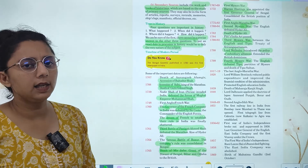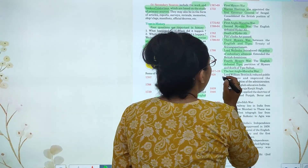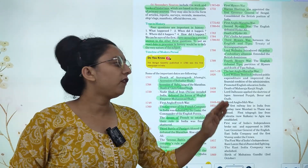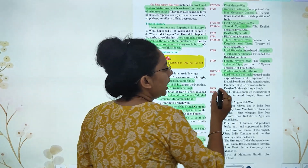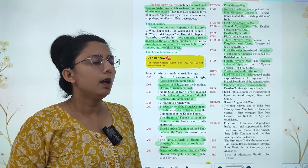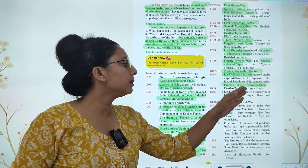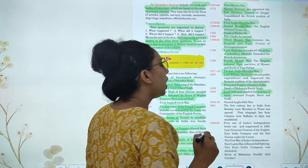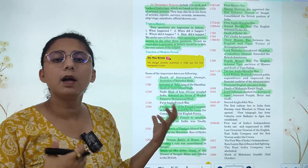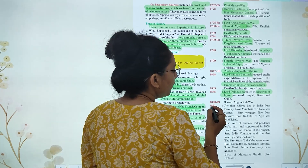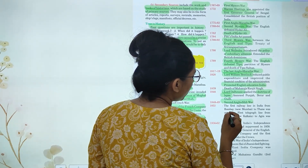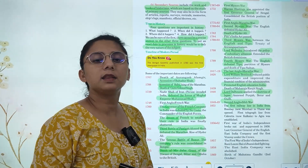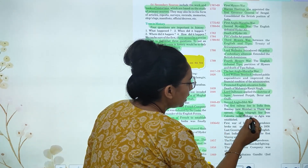The last Anglo-Maratha war ended around 1818. In 1848, Lord Dalhousie applied the Doctrine of Lapse, annexing territories including Bengal, Berar, and Awadh. In 1848 to 1849, the Second Anglo-Sikh War. Then in 1853, the first railway line was opened from Bombay to Thane, and the telegraph line from Calcutta to Agra was established.